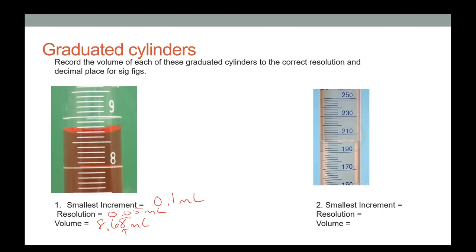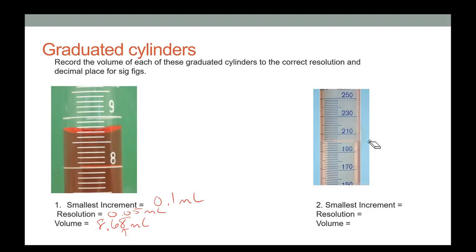This larger graduated cylinder has markings around 190 to 210 milliliters, and I need to figure out what each increment represents. Counting between lines carefully — 195, 200, 205 — takes some work to identify the increment size.